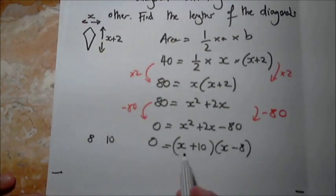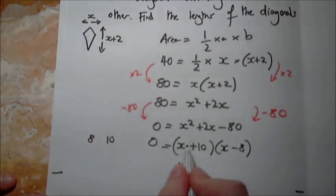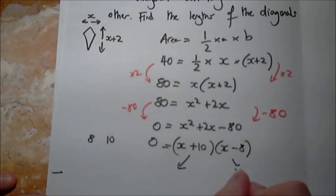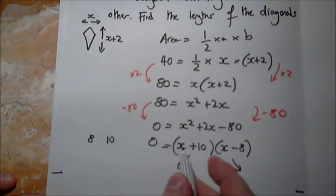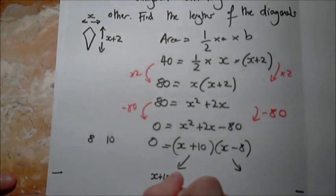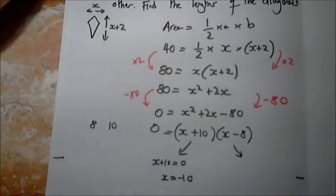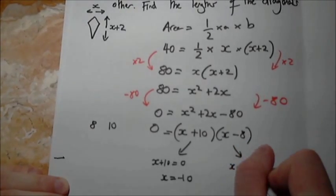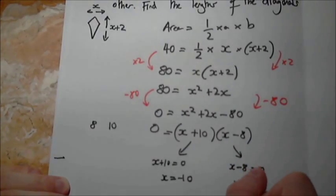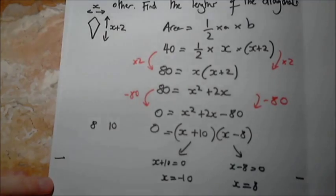Next step then is, if this is equal to zero, then this part here must be equal to zero or this part must be equal to zero. So if x plus 10 equals zero, then x must equal minus 10.